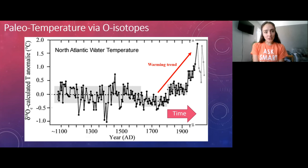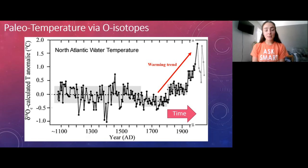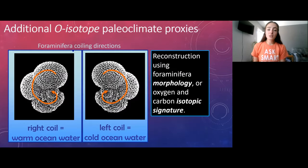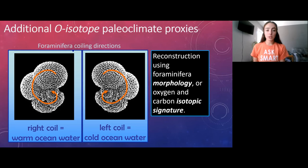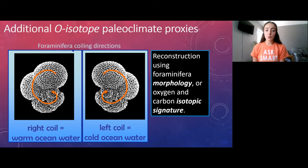We don't rely only on oxygen isotopes from foraminifera for paleo-temperature estimates — we have many other proxies. We also use foraminifera morphology: certain species coil in specific directions depending solely on water temperature. By studying modern foraminifera species and the temperatures at which they coil specific directions, we can infer the same behavior in ancient foraminifera of the same species.